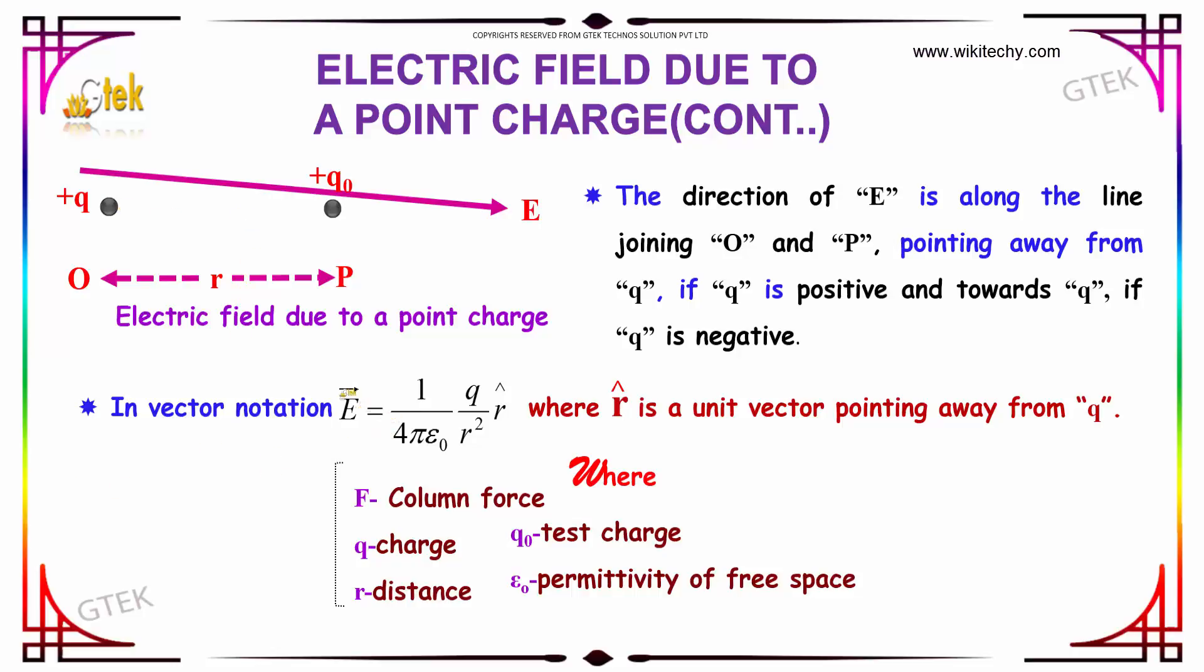In terms of vector notation, E vector is equal to 1 divided by 4 pi epsilon 0, Q divided by R square into R cap, where this R cap is the unit vector pointing away from Q. Here F is the Coulomb force, Q is the charge, Q0 is the test charge, R is the distance, and epsilon 0 is the permittivity of free space.